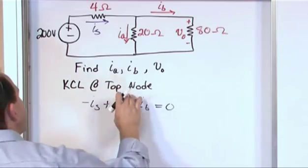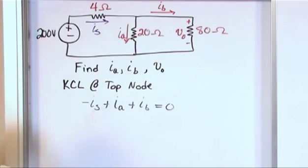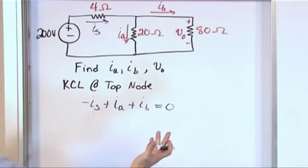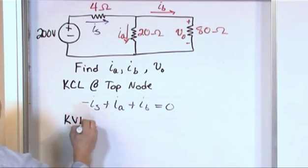So, we have done a node equation up here, but we cannot write any more node equations because we only have two nodes in this circuit, and we know that we can only write one node equation because of what we discussed earlier, so we have to turn to Kirchhoff voltage law. So, let's write a Kirchhoff voltage law.